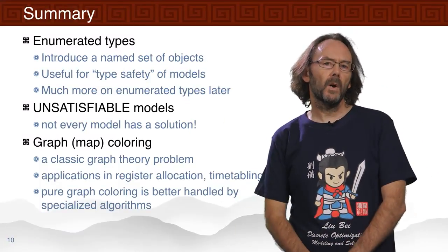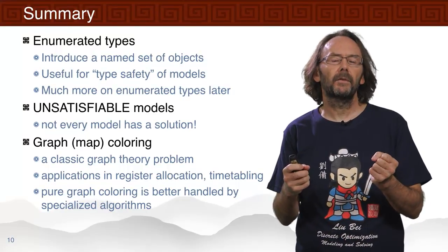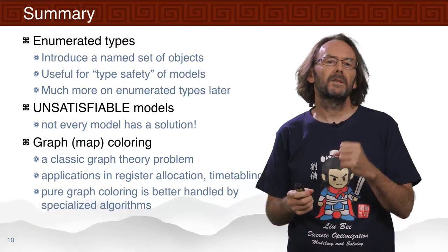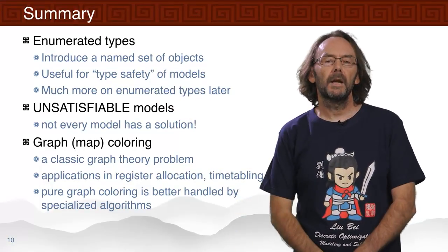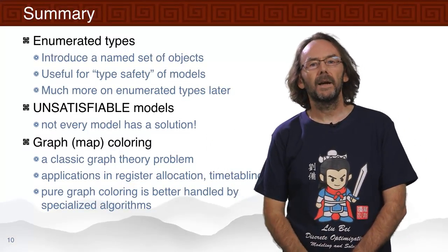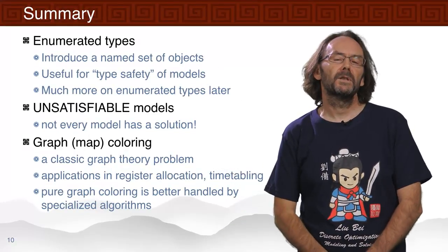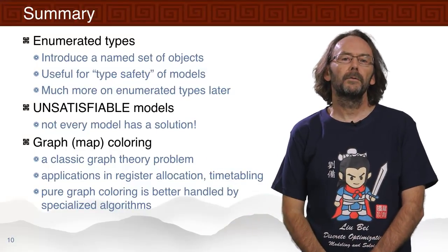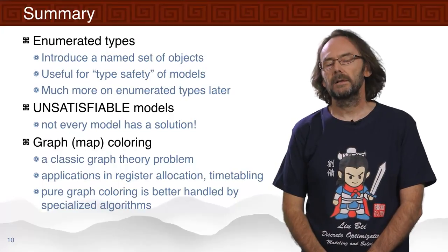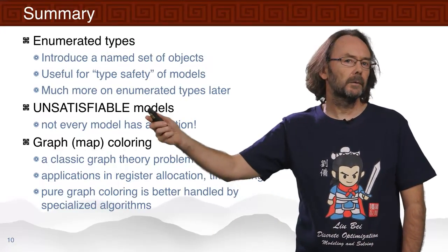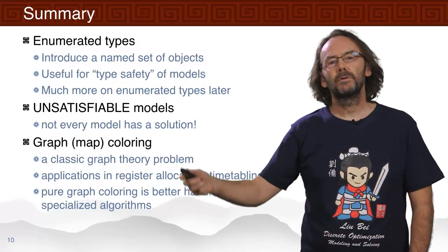In this lecture we've introduced enumerated types — a way of introducing a named set of objects. Their real importance is that they introduce type safety in models: if I have two different sets of objects I'm making decisions about, I don't want to mix them up. Enumerated types map down to integers in the solver — we could have used numbers one to four instead of colour names — but using named types gives us a model that's easier to understand and provides type safety for more complicated models. We also saw for the first time an unsatisfiable model. Not every model has a solution, and more often than not an unsatisfiable result indicates a bug in the model or data.